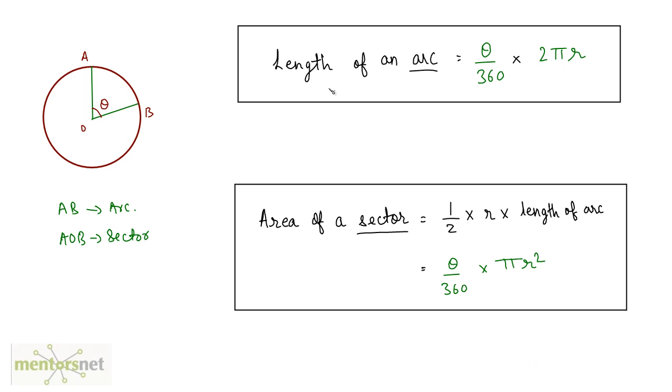Now if someone asks you what is the length of an arc, you've got a formula that's theta by 360 times twice pi r that is the circumference of the circle. Now what is theta? Theta is the angle of this arc from the center and it will be measured in degrees.